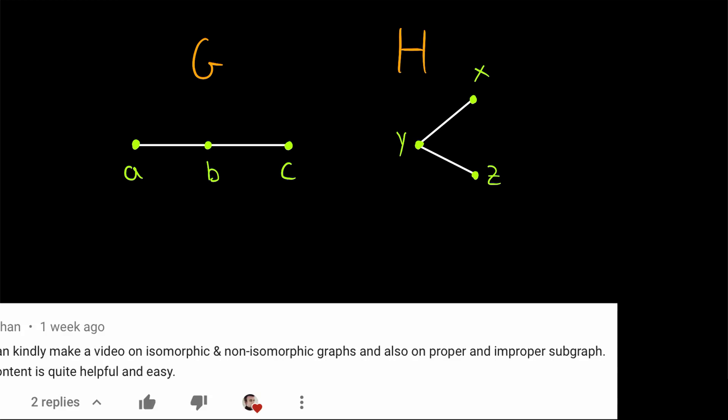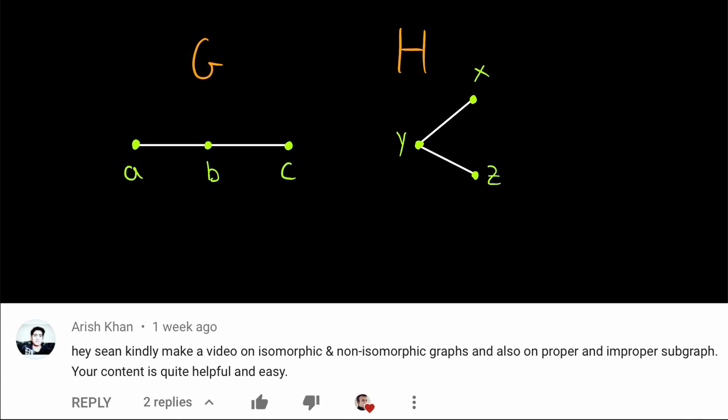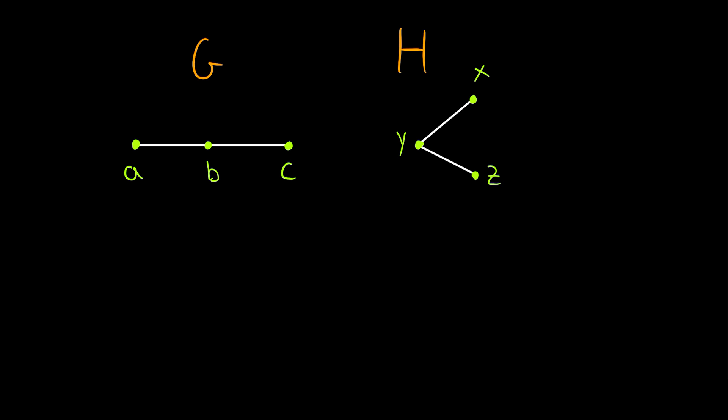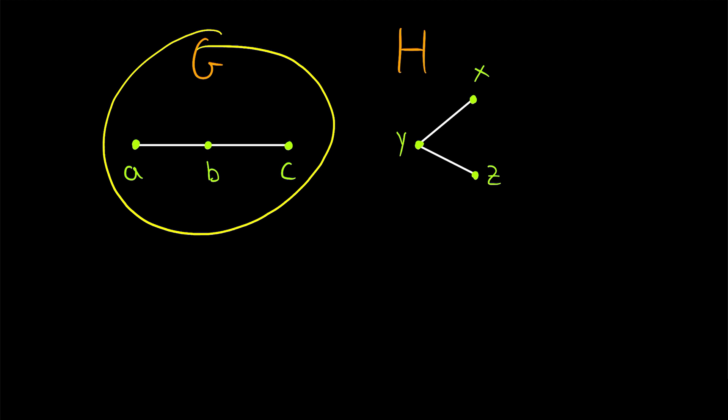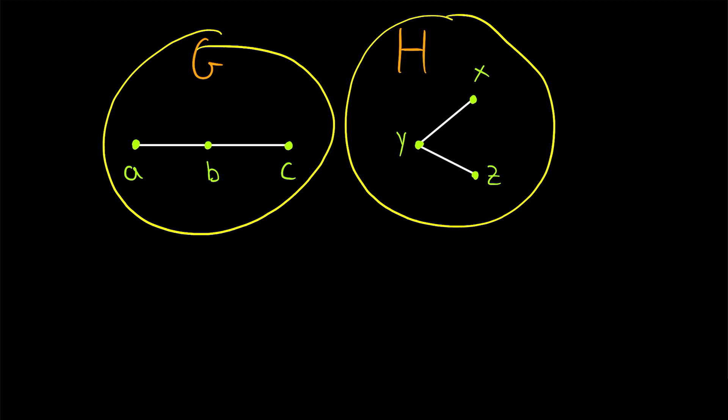This is a viewer-requested video. I think the definition of isomorphic graphs can seem needlessly complicated. Just saying that these graphs have the same structure does a pretty good job of communicating what we mean. So before we jump straight to the definition of isomorphic graphs, let's just make sense of exactly what this definition needs to capture, and then I think it will make a lot of sense when we see the definition.